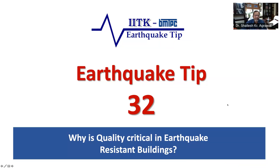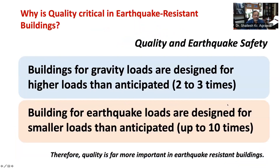If quality control is not done, the weakest link of the building will fail. Quality control is important not only for earthquake-resistant buildings but also for others. For example, buildings meant to resist gravity loads are designed to resist loads about two to three times more than the gravity load that may arise during the lifetime of the building. Hence, no damage occurs in buildings with minor structural deficiencies because of adequate margin in design, and some errors can be tolerated without serious consequences.